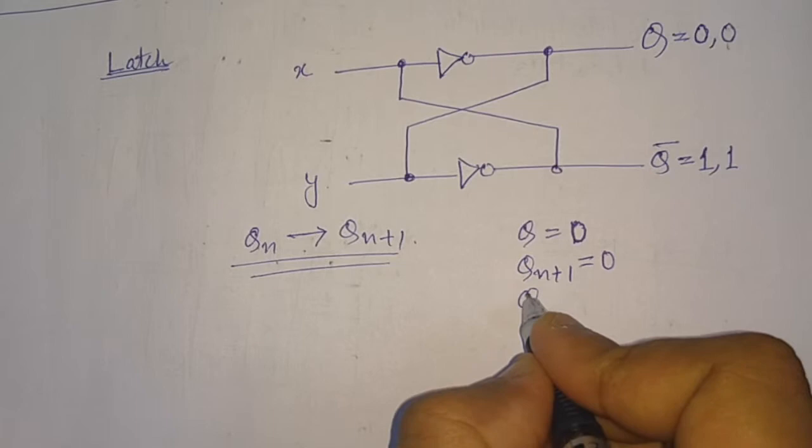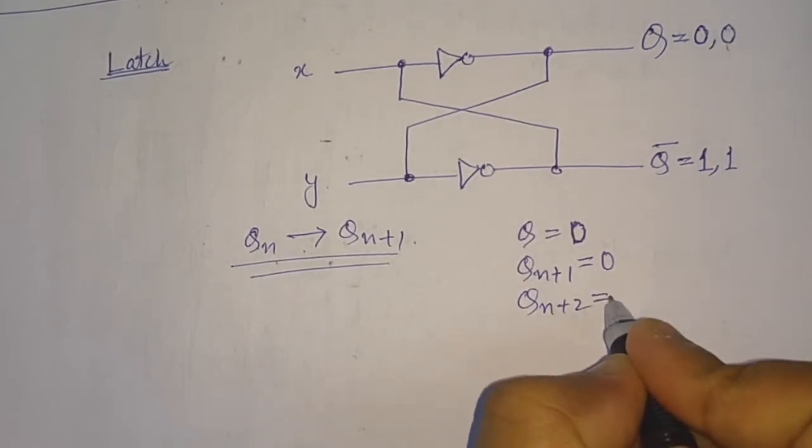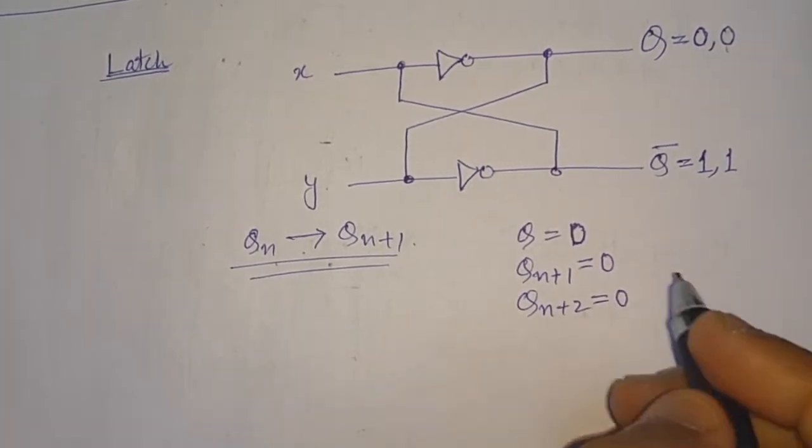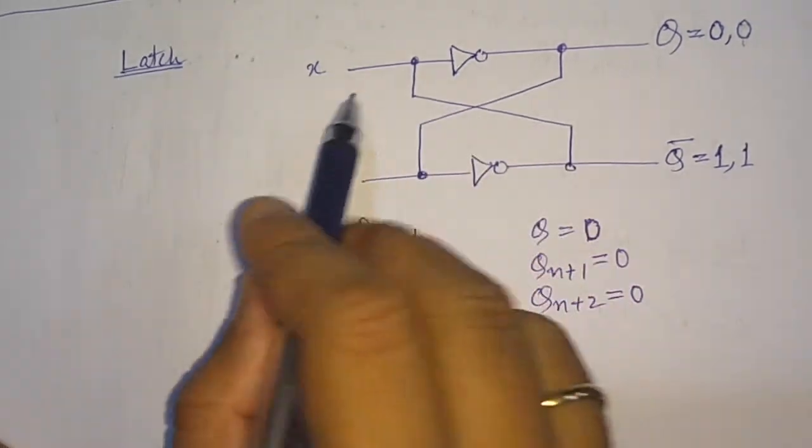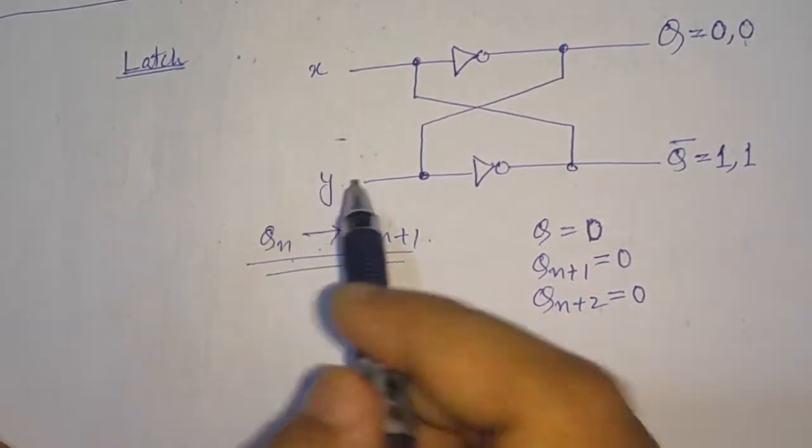And for the next cycle also Q+2, we will be getting here zero only until this circuit is disturbed by these input values or input signal levels.